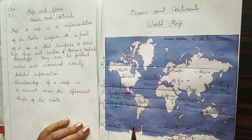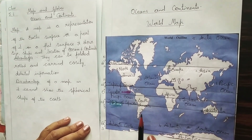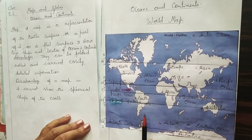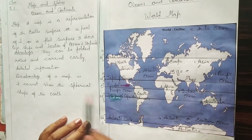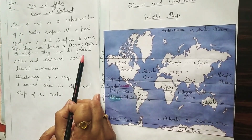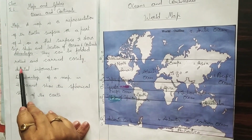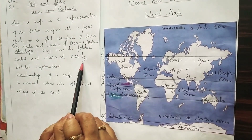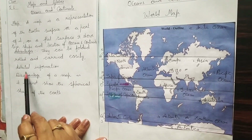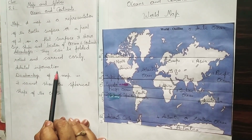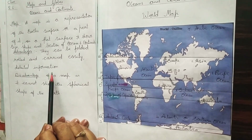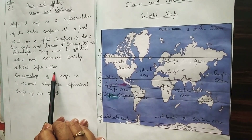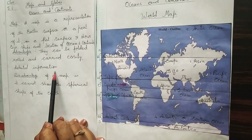Maps have advantages. They can be folded, rolled, and carried easily. They give us a lot of detailed information.